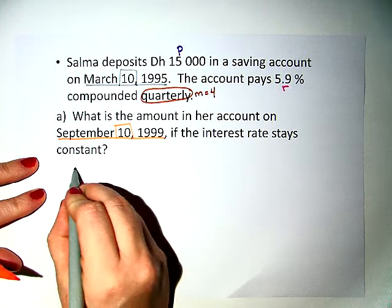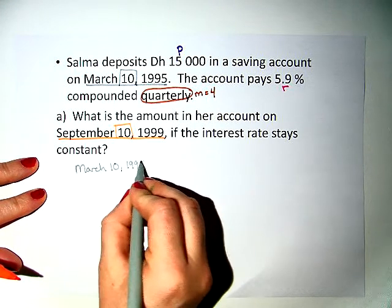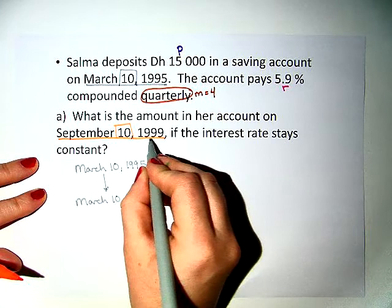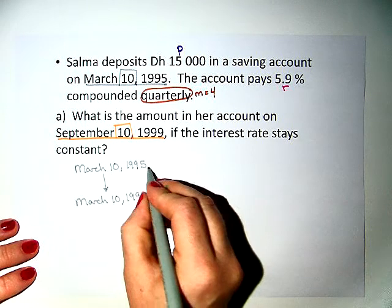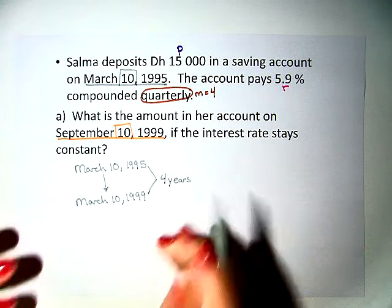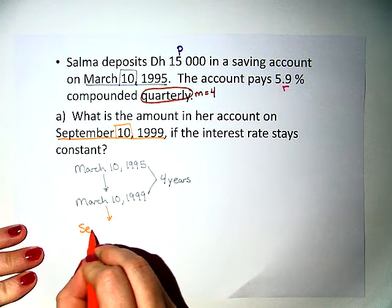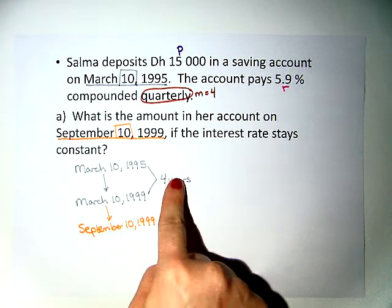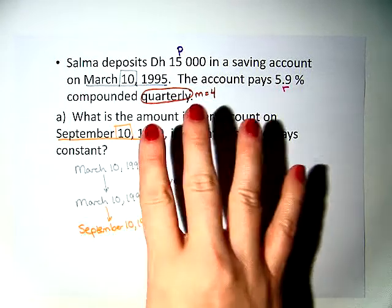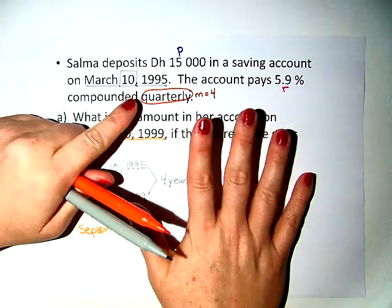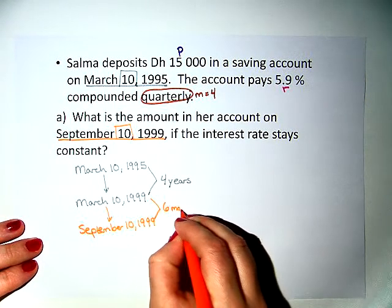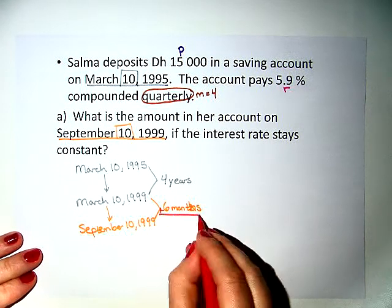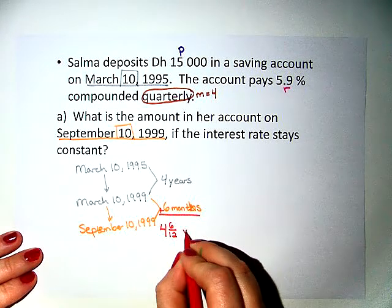We're going to go from March 10, 1995, all the way to March 10, 1999 — so 1995 to 1999 is 4 years. Now from March 10 to September 10, we have to count: March, April, May, June, July, August, September — so we actually have 6 months. That means our time, adding these together, is 4 and 6 over 12 years.